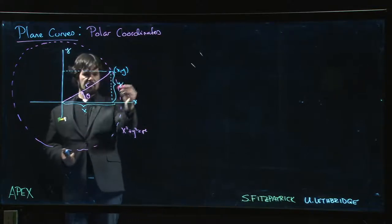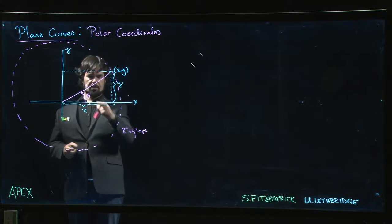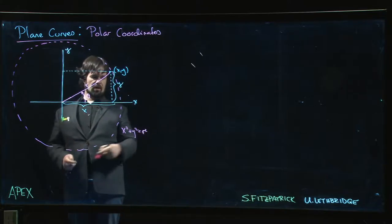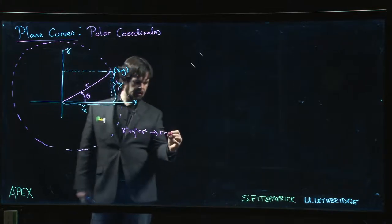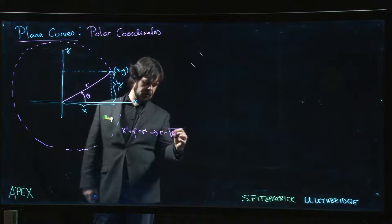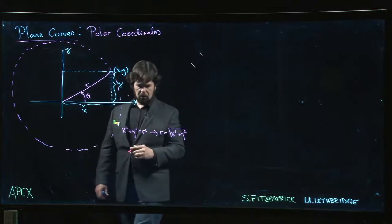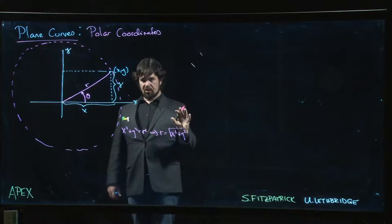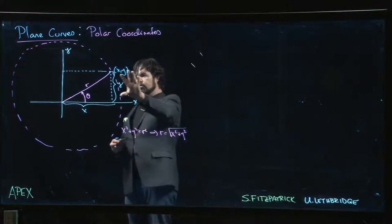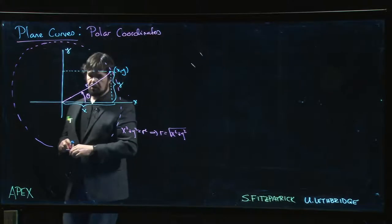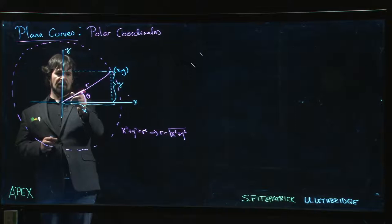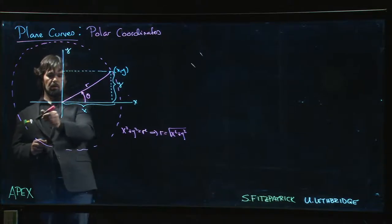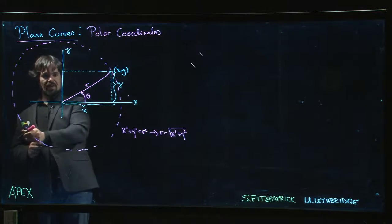We can get this relationship: r is essentially square root of x squared plus y squared. We will sometimes allow r to be negative. It seems a little bit unnatural, but basically a negative r value corresponds to - we point our compass in that direction and we put the engines in full reverse and we go the wrong way.